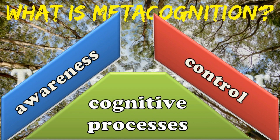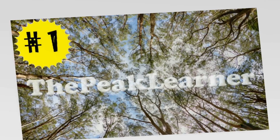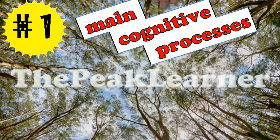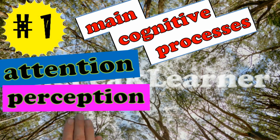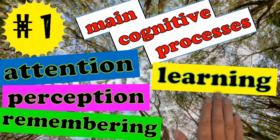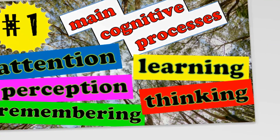Let's analyze the three components of this definition. First, what are the main cognitive processes? Attention, perception, remembering, learning, and thinking.